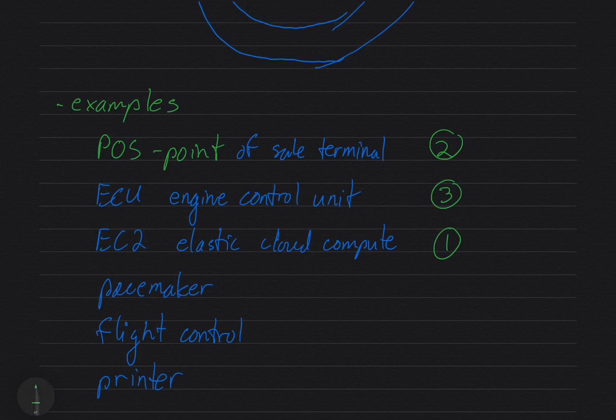Pacemaker - it's monitoring the electrical impulses in your heart and making sure that your heart's contracting at the correct times and taking corrective action if it needs to. Obviously timing is very important there, so that's a real-time system. Flight control systems - you obviously want those to do things at the right time.